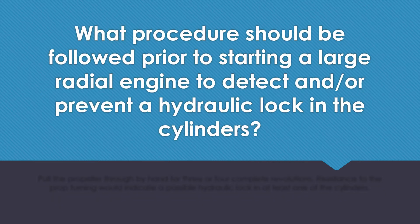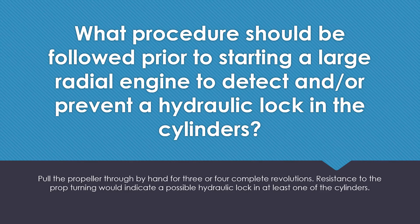What procedure should be followed prior to starting a large radial engine to detect and/or prevent a hydraulic lock in the cylinders? Pull the propeller through by hand for three or four complete revolutions. Resistance to the prop turning would indicate a possible hydraulic lock in at least one of the cylinders.